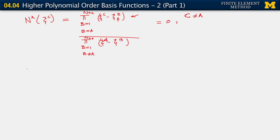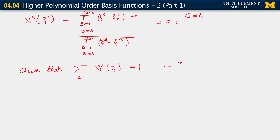It's a simple enough exercise for you to check that the other property also holds: the sum over A of NA at any value of C is equal to 1. Check this out using the Lagrange polynomial formula as an exercise.